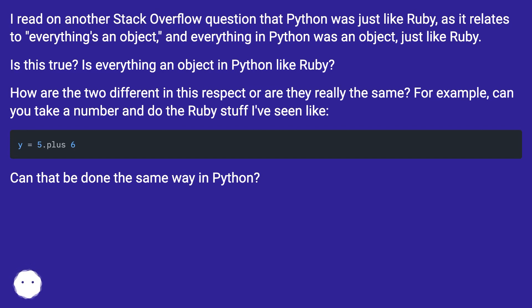How are the two different in this respect or are they really the same? For example, can you take a number and do the Ruby stuff I've seen like? Can that be done the same way in Python?